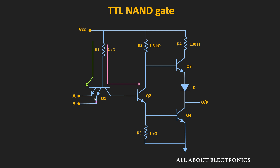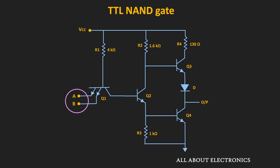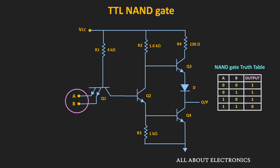In this multi-emitter transistor, if any one of the inputs is low, then the base-emitter junction will get forward biased, and most of the current will flow through that specific input. For two inputs A and B, we will have 4 input combinations. Looking at the truth table of the NAND gate, whenever any one of the inputs is zero, the output is logic high. And whenever both inputs are high, then only the output of the gate is low.